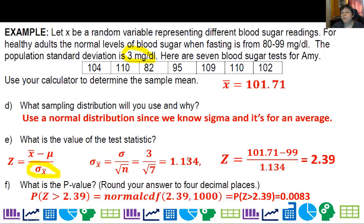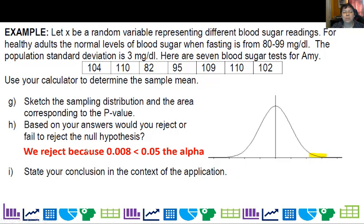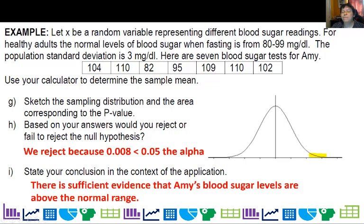So what is the p-value? It's the probability z is greater than 2.39, which is normal CDF from 2.39 to 1000, and I get 0.0083. Is that a low probability? It's a very low probability — this seems a little high on average. The probability is 0.008, so since it is so low, we reject the null hypothesis. We say there is sufficient evidence for the alternative hypothesis that her blood sugar is above the normal range.